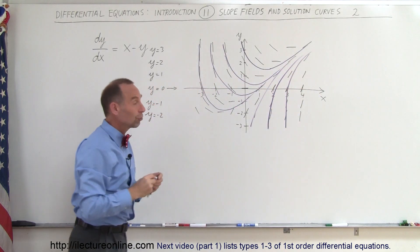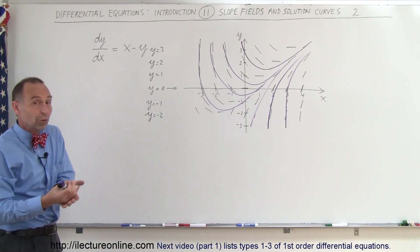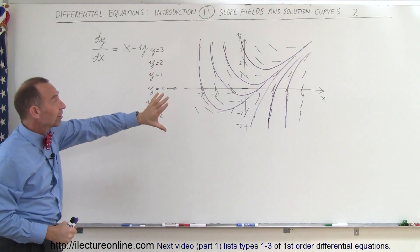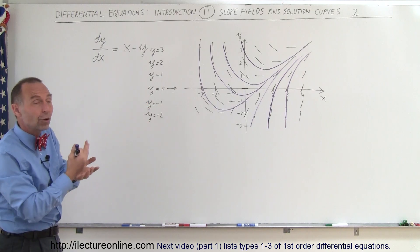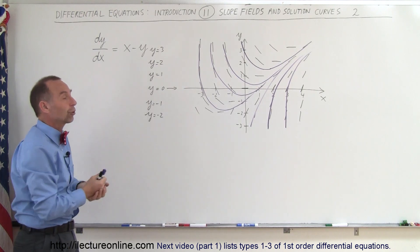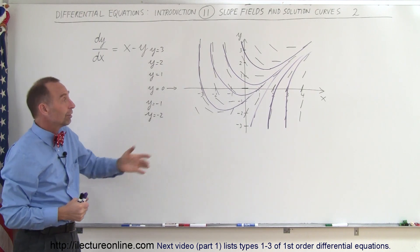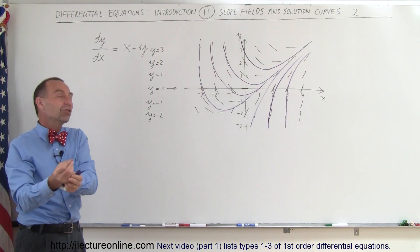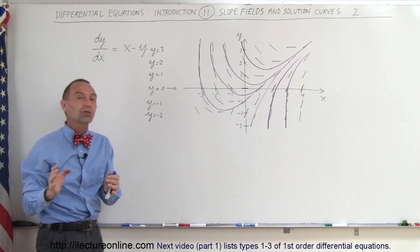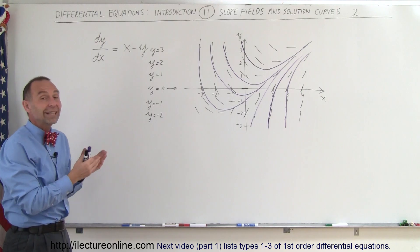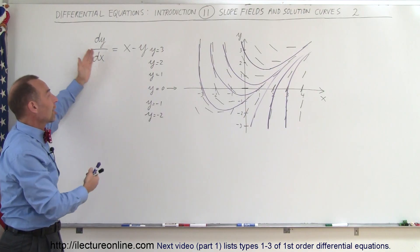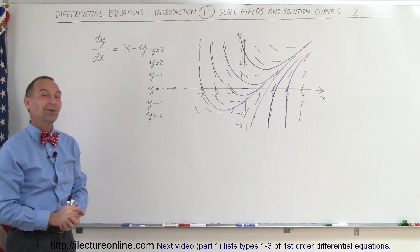Drawing a slope field for a differential equation — in this case a first order differential equation — represents the slope of the function. If we find the slope everywhere on the xy plane, we can draw what we call solution curves, and any of those curves are possible solutions to the differential equation. That's called the general solution. If we want a particular solution, we need initial conditions that define which of those curves would represent the real solution under those particular conditions. Hopefully that gives you a better understanding of what differential equations are and how we can find a solution.